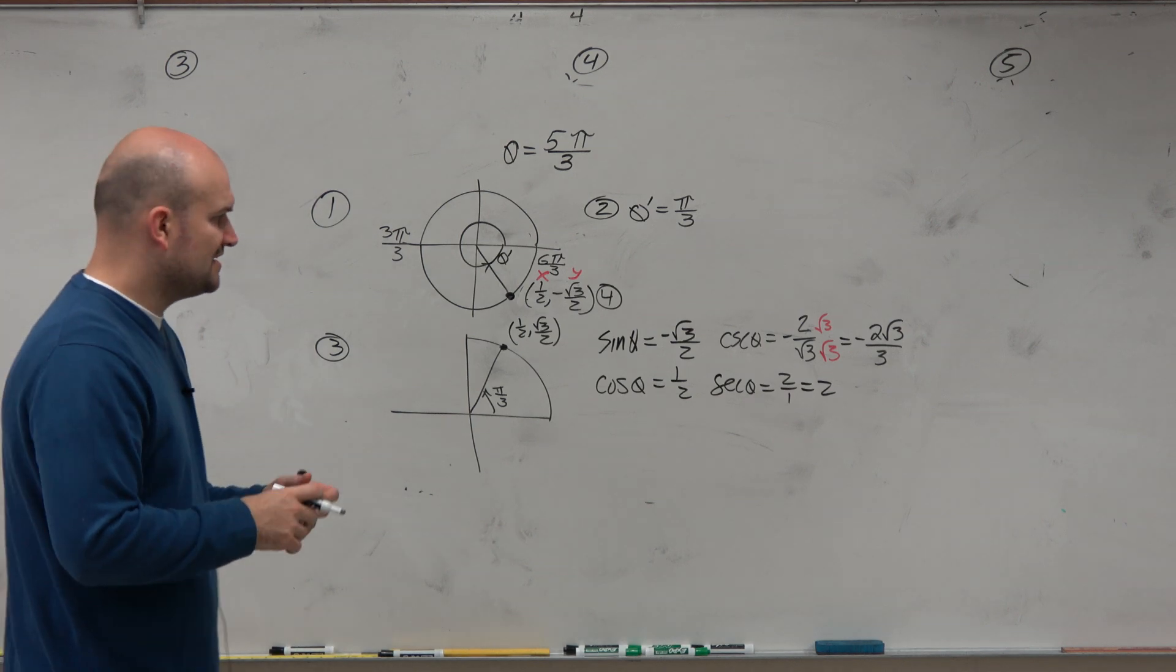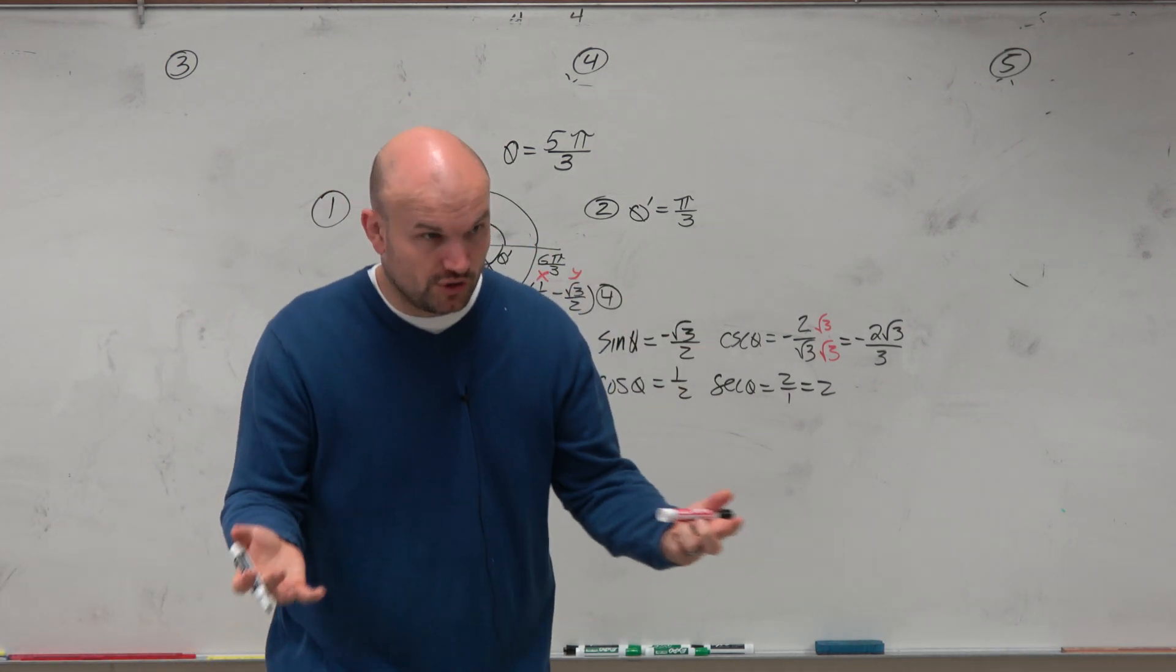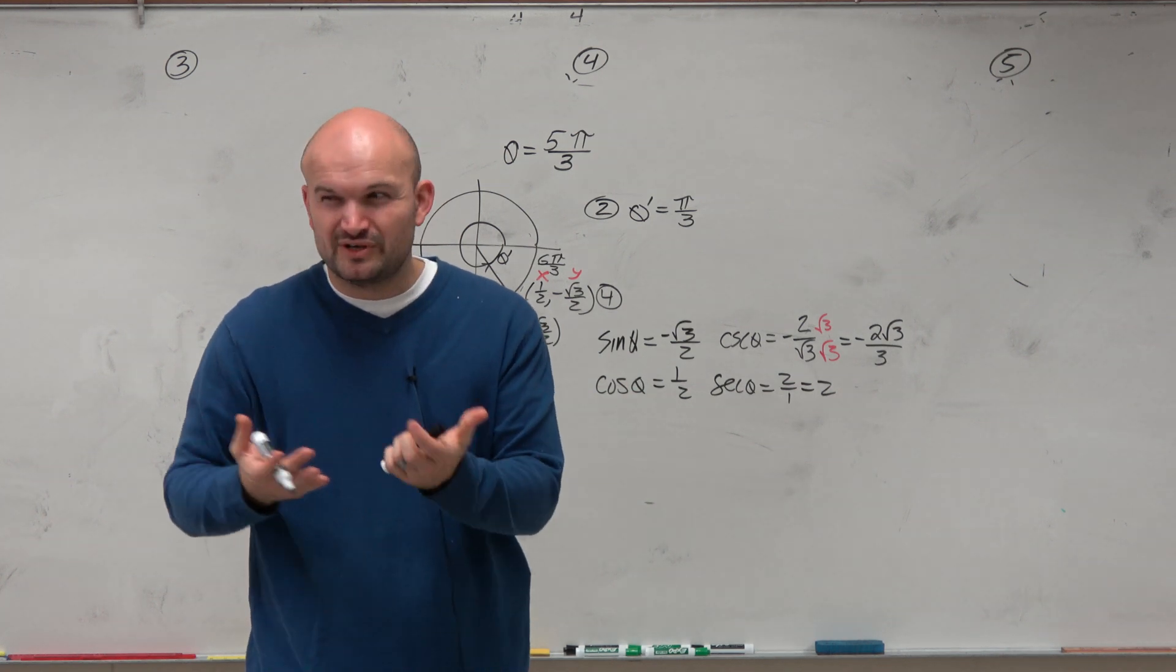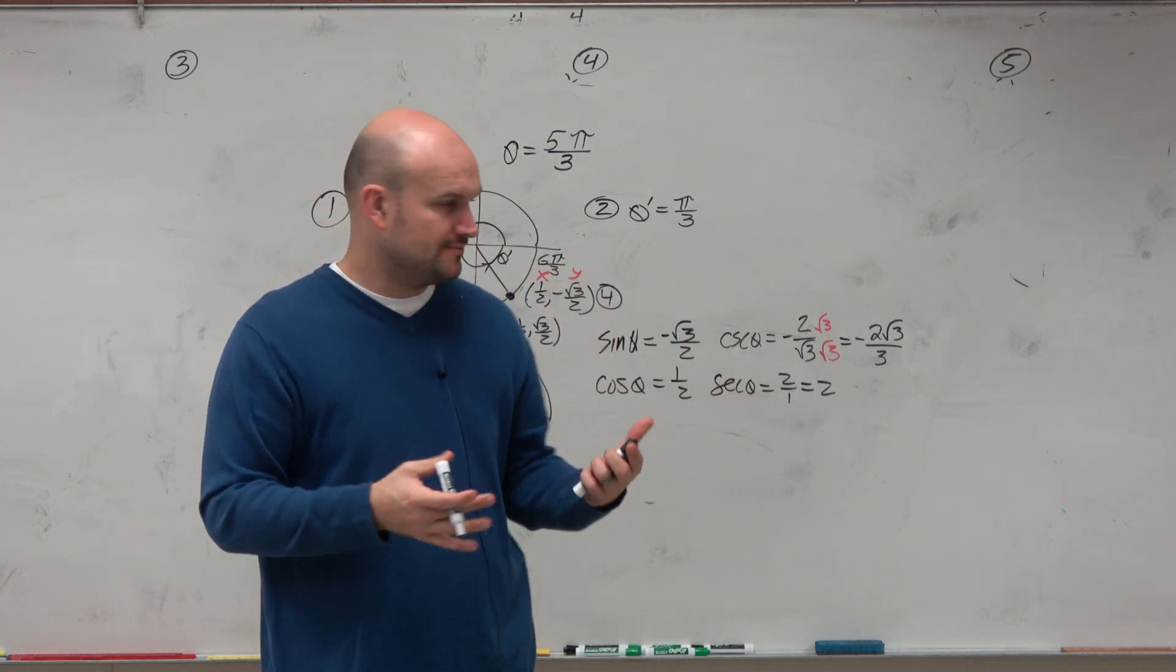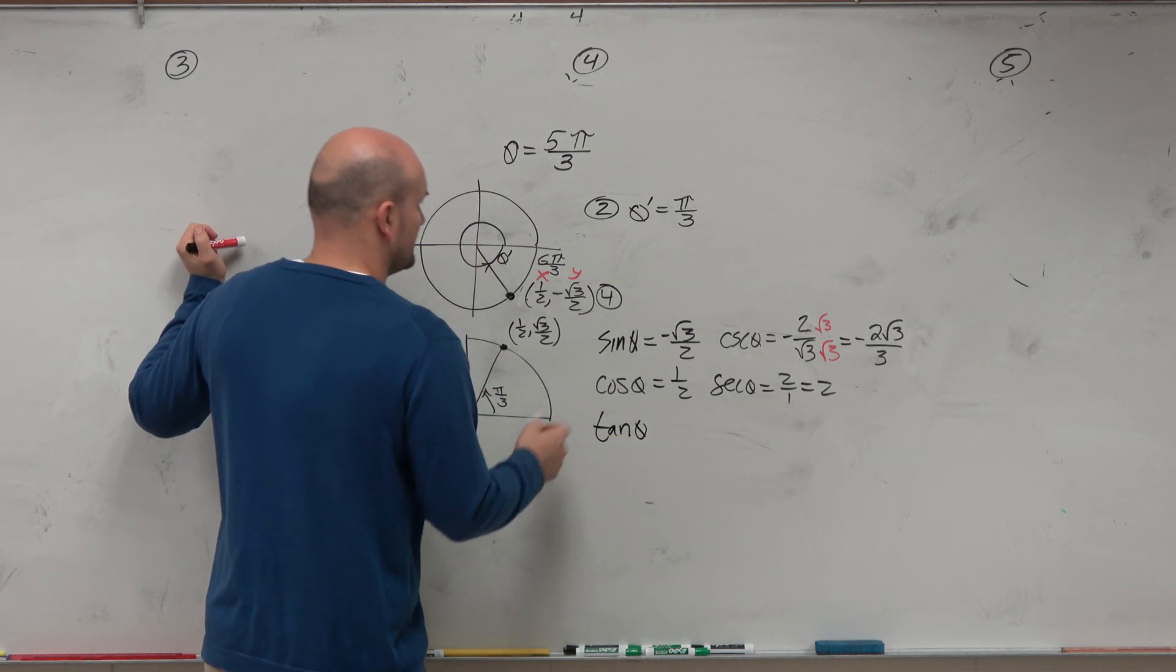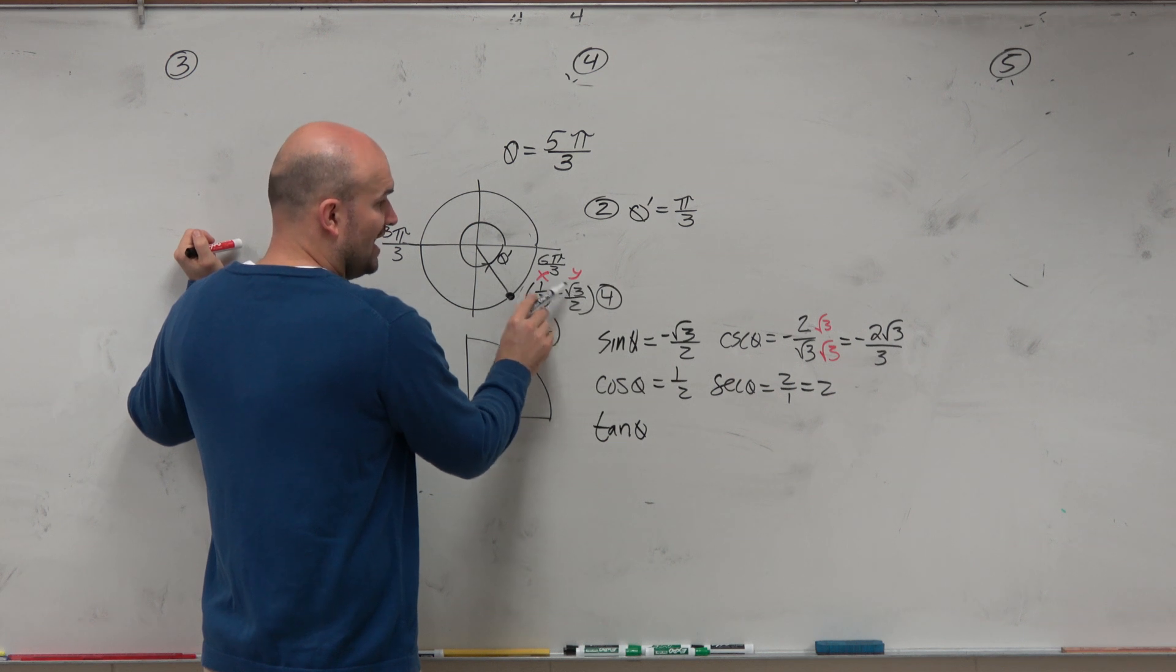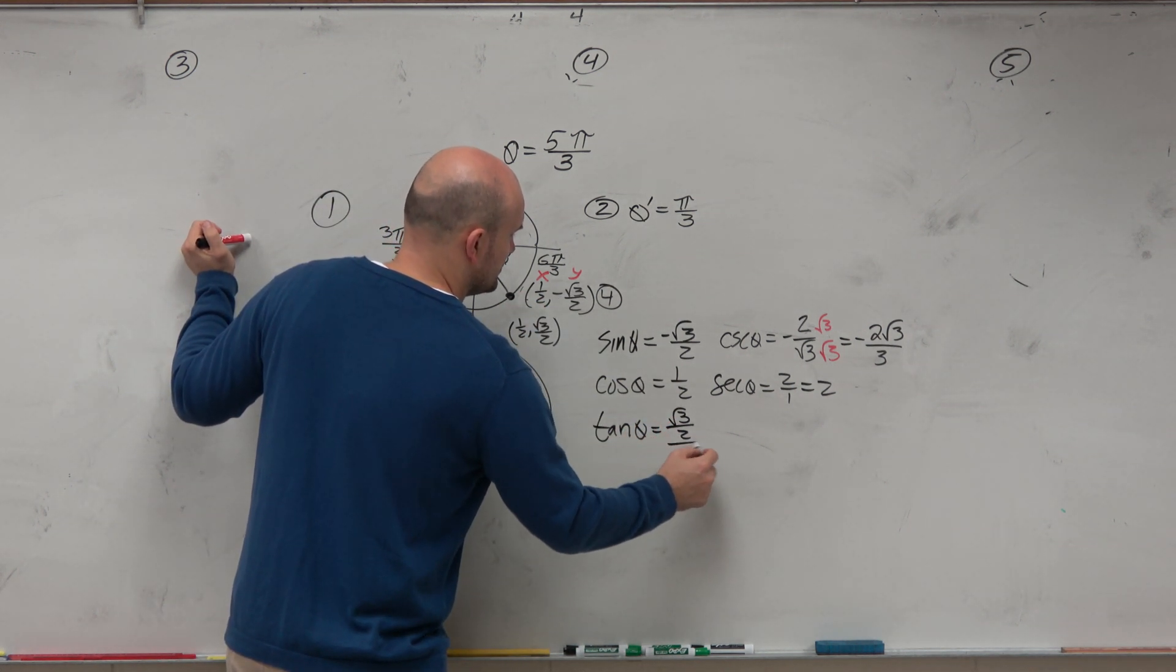All right, now I'm leaving tangent and cotangent off just because I'm going to slowly show you how to do these once, but my goal is for you guys to start recognizing these patterns so you don't have to keep on doing this work. So the tangent of θ is y over x. So that's negative square root of 3 over 2 divided by 1/2.